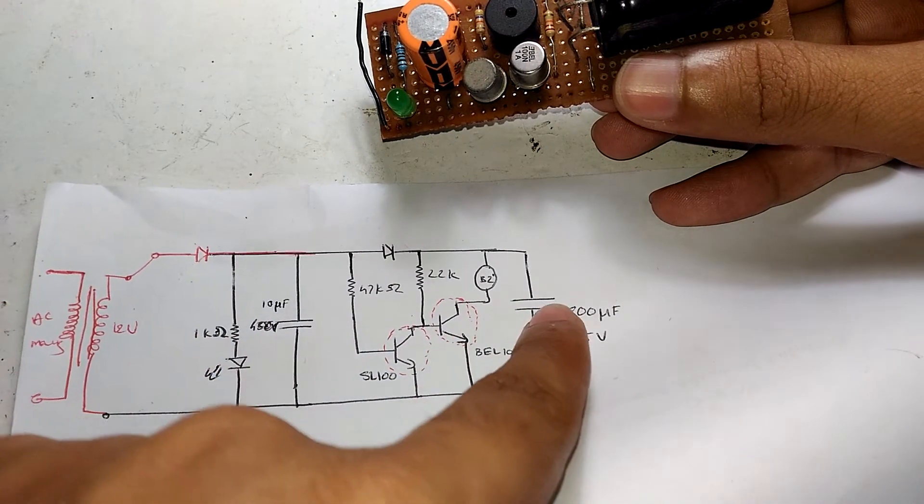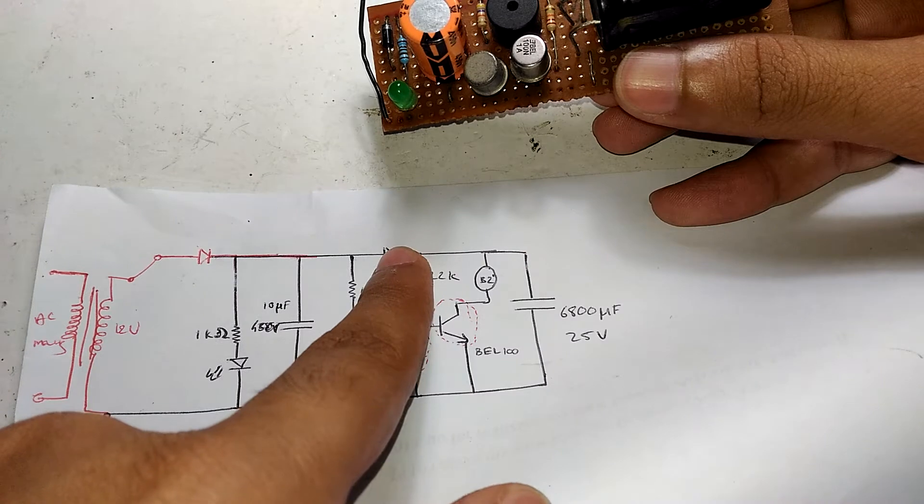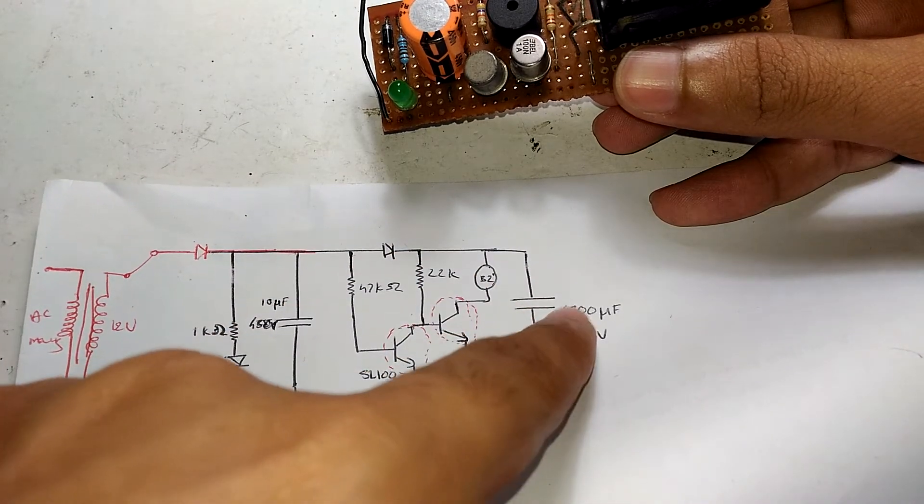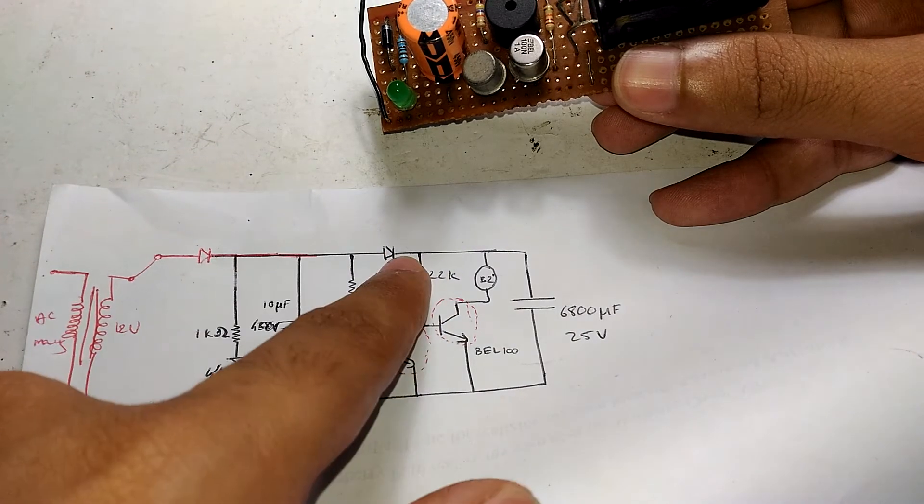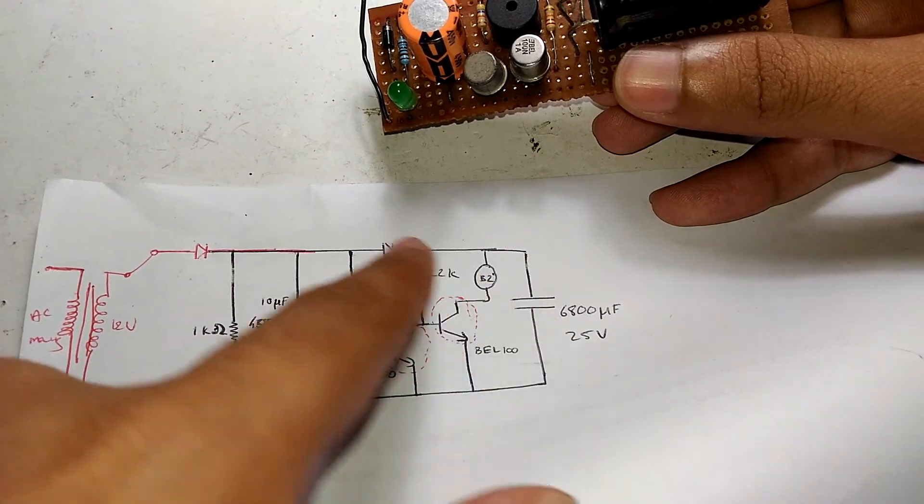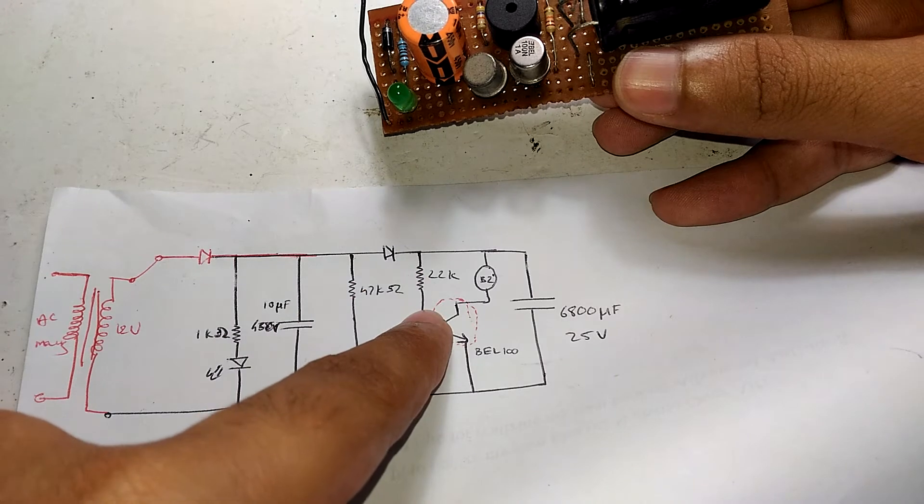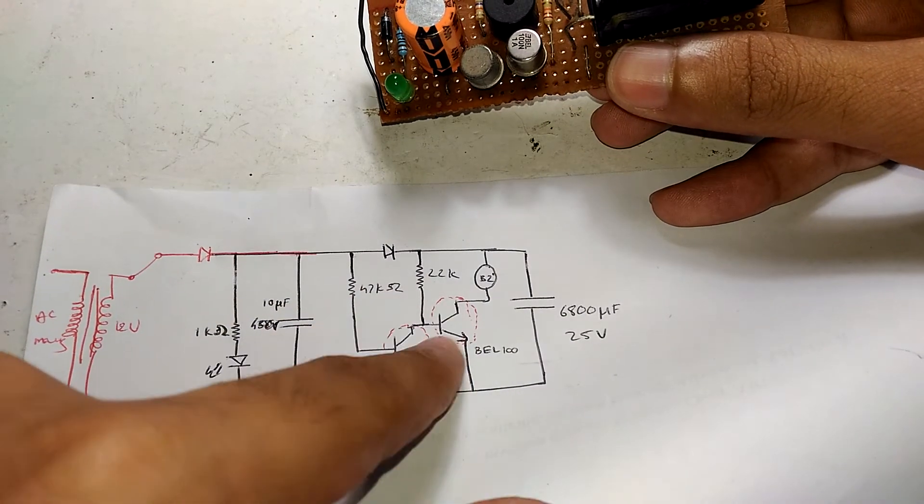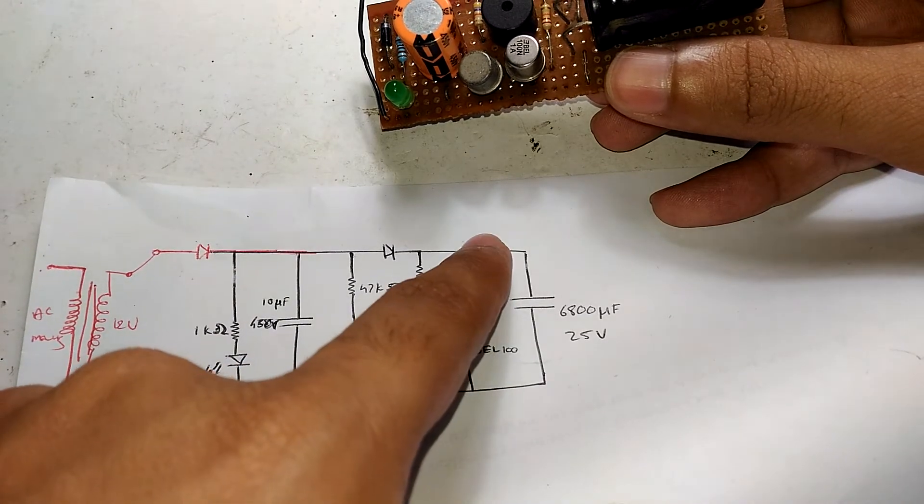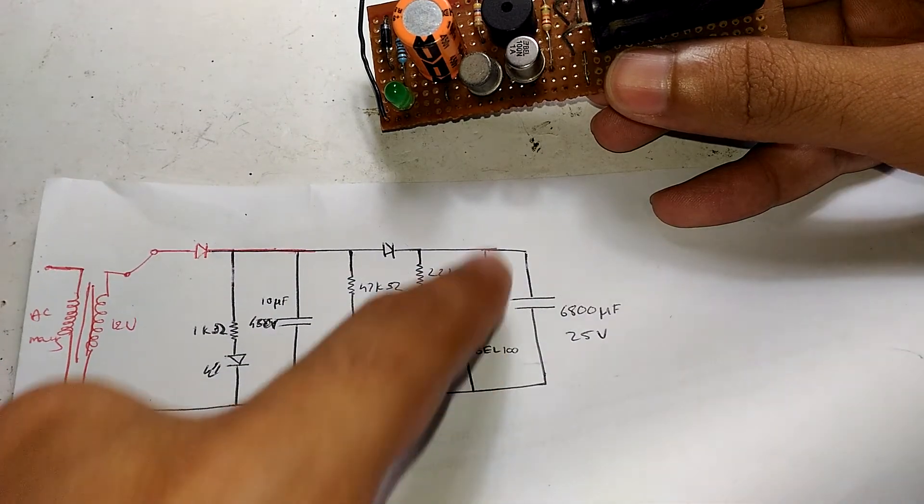Without this capacitor, if the current went off and came back on in just a second, that would instantly turn this terminal off. The transistor being off would discharge this huge capacitor, and that stored charge is forced through this 22k ohm resistor to the base of this transistor, turning it on.